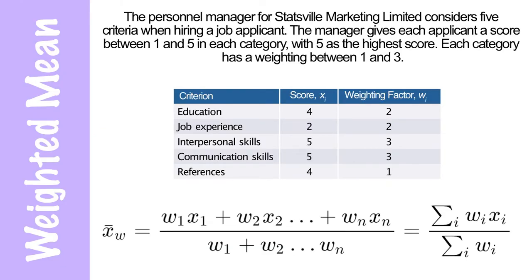The weighted mean. The personnel manager for Statsville Marketing Limited considers five criteria when hiring a job applicant. The manager gives each applicant a score between one and five in each category with five as the highest score. Each category has a weighting between one and three. You can tell by looking at the chart that they value interpersonal communication skills more than the others. And in fact, in this case, references are the least valuable.